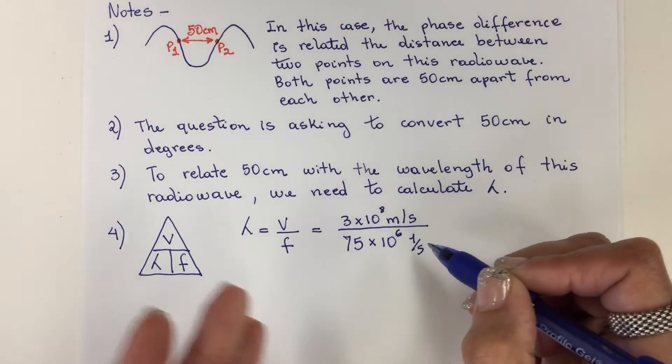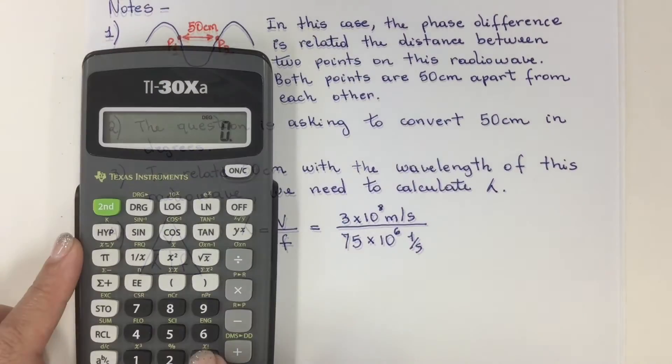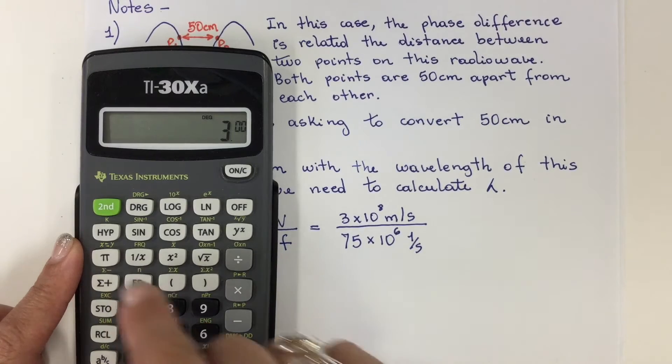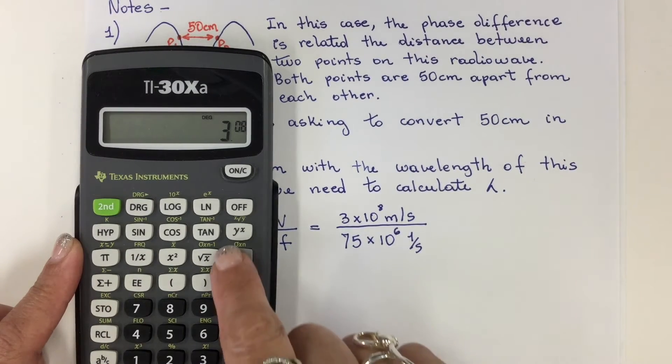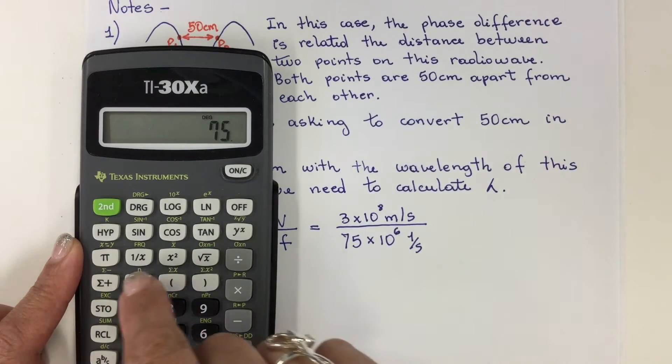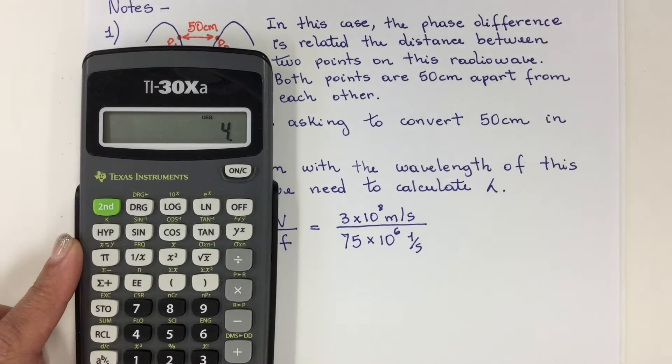Hertz is the same thing as 1 over second. So 3 times 10 to the 8 divided by 75 times 10 to the 6 is 4 meters.